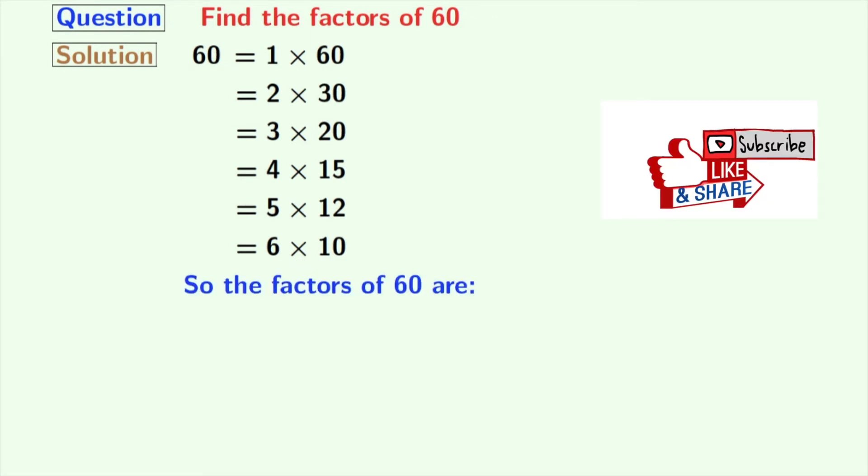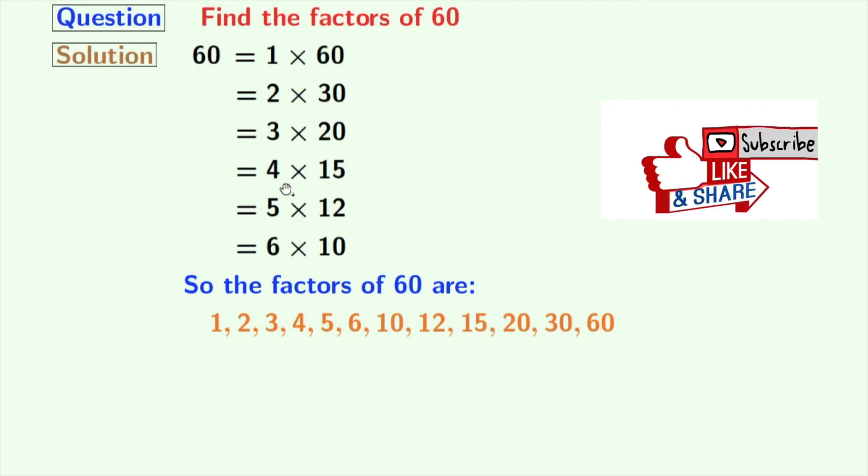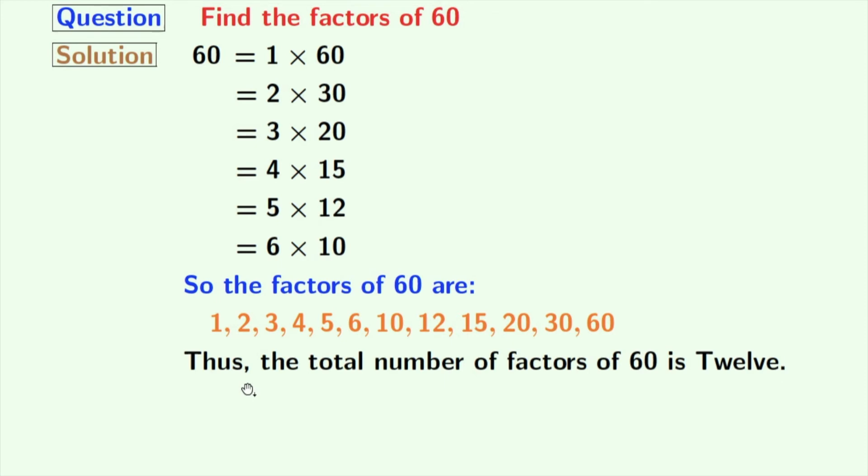So here are the factors of 60 which are 1, 2, 3, 4, 5, 6, 10, 12, 15, 20, 30 and 60. So the total number of factors of 60 is 12.